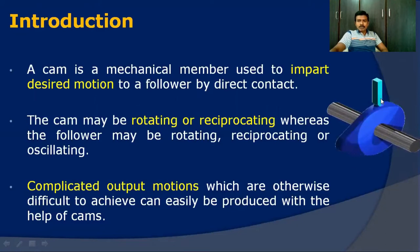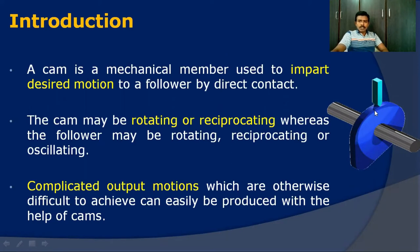The cam is a mechanical member used to impart a definite motion to the follower by direct contact. The cam and follower are in direct contact, which may be either point contact or line contact. Hence, it belongs to a higher pair in kinematics. Since this cam and follower mechanism consists of point contact or line contact, it belongs to the higher pair.